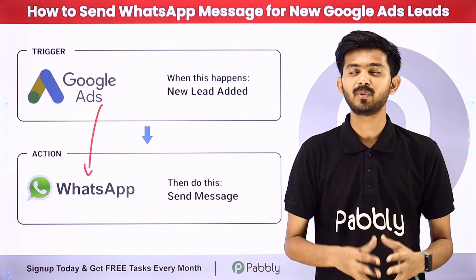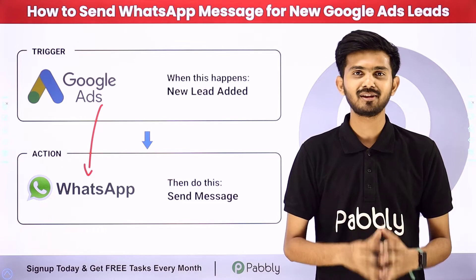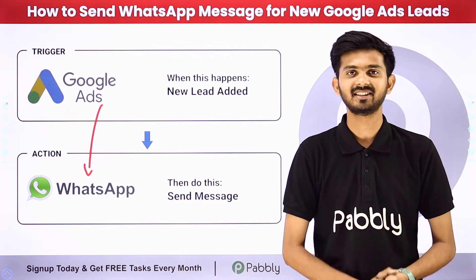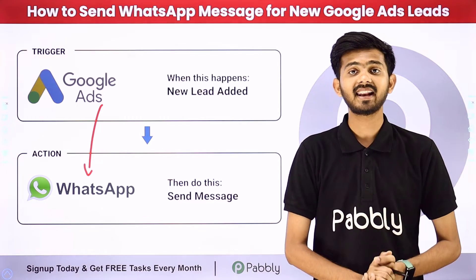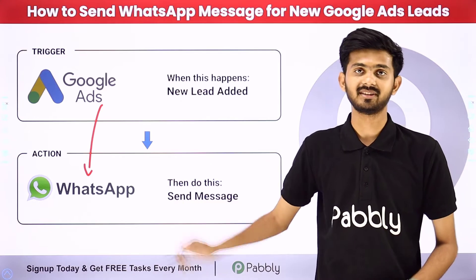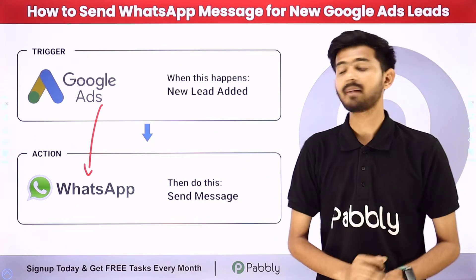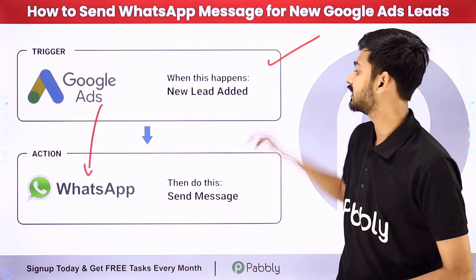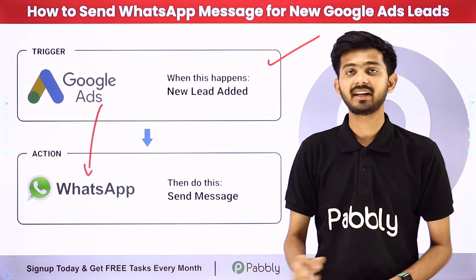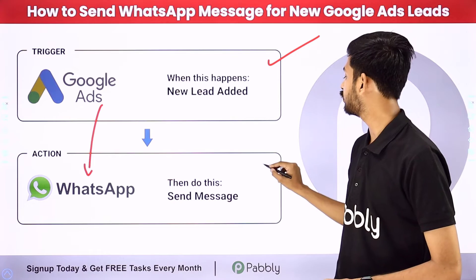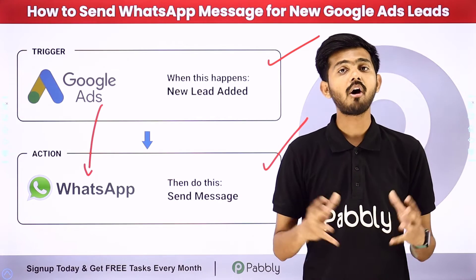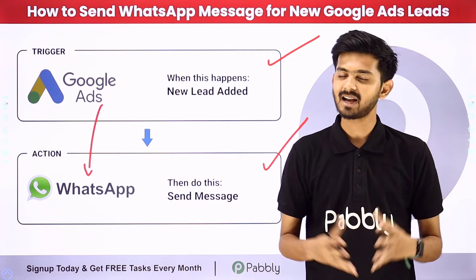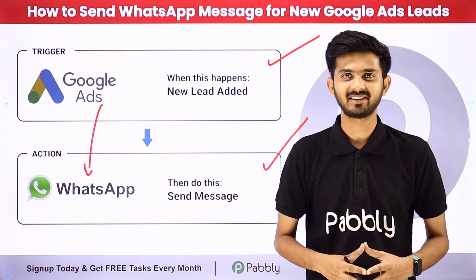To build this connection, I am going to use Pably Connect, which is an amazing software for automation and integration. In Pably Connect, I have to use a Trigger and an Action. In the Trigger application I am going to use Google Ads, and in the Action application I am going to use WhatsApp Cloud API. Let me take you to my computer screen.